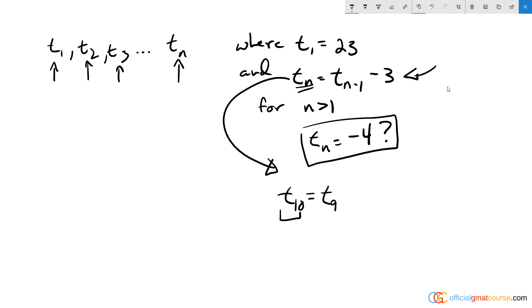It's going to be equal to t sub 10 minus 1, which is 9, minus 3. So it's the value of the 9th number minus 3 gives the value of the 10th number. But the 10 and 9 are just saying it's the 10th or 9th number in the sequence.